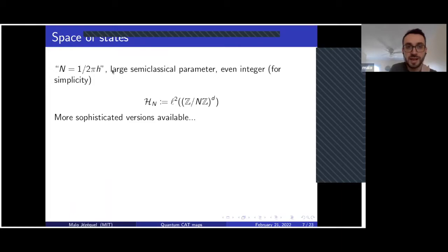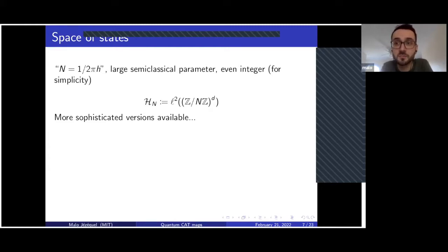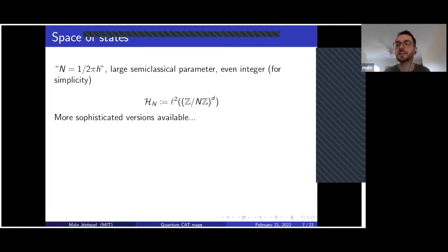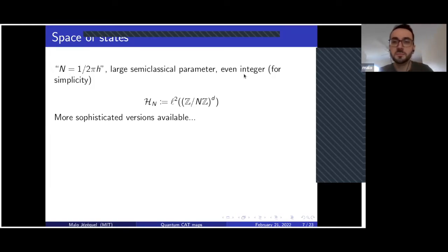To do so, I choose a large parameter N. If you are acquainted with semi-classical analysis, this is the inverse of h up to some constant. You can interpret it as the number of particles in your system, meaning that when N tends to infinity, you look at what's called the semi-classical limit — you expect the laws of quantum mechanics to recover classical mechanics when N tends to infinity.